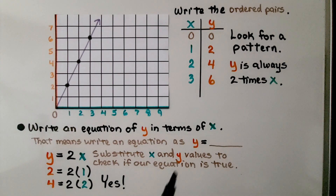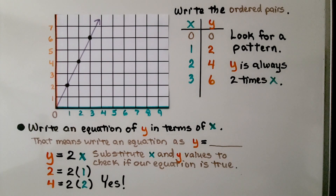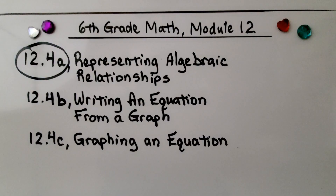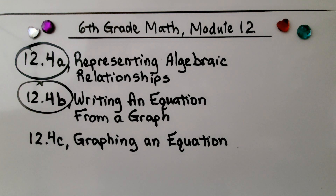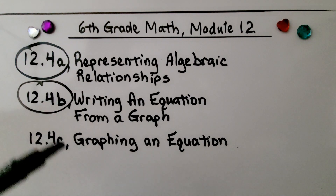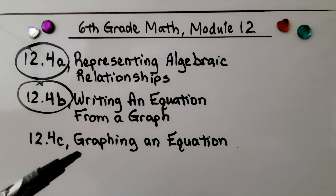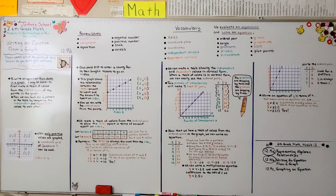You can try writing your table of values vertically to help you see the ordered pairs quickly. We're finished with part 2 of this lesson and moving on to the last part, 12.4c: graphing an equation. We learned how to write an equation from a graph; now we're going to learn how to draw a graph from looking at an equation. I hope you enjoy the rest of your day and join me for the last part of the lesson.